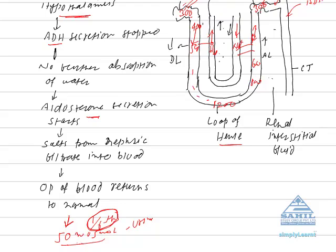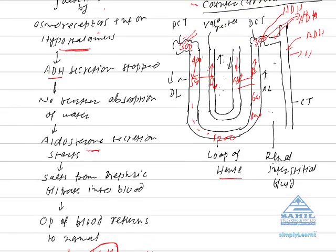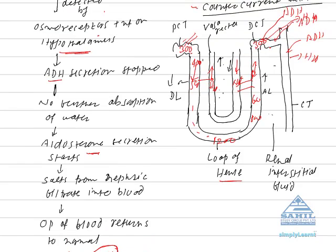Due to the action of ADH, water starts being absorbed from the DCT and collecting duct. Due to this absorption of water, the nephric filtrate becomes concentrated again — 500, 600, up to a maximum of 1200. So a urine is formed whose osmotic concentration is four times more than the normal osmotic concentration of blood. This type of urine is called hypertonic urine.